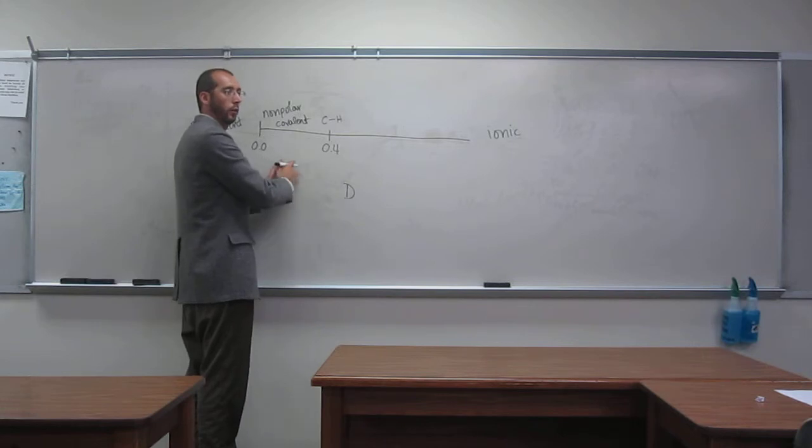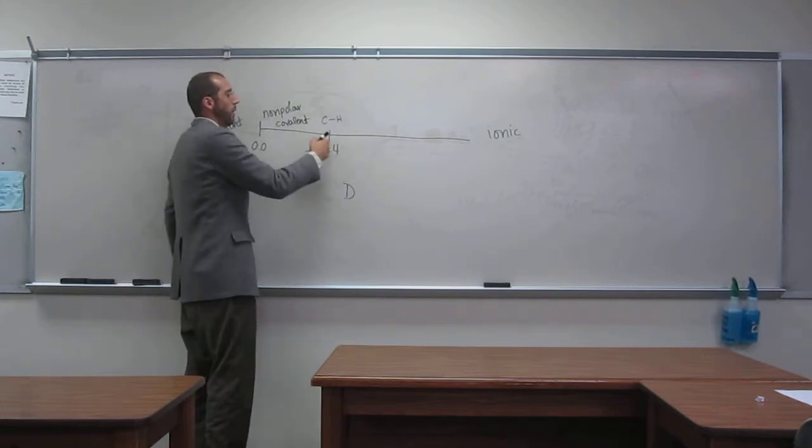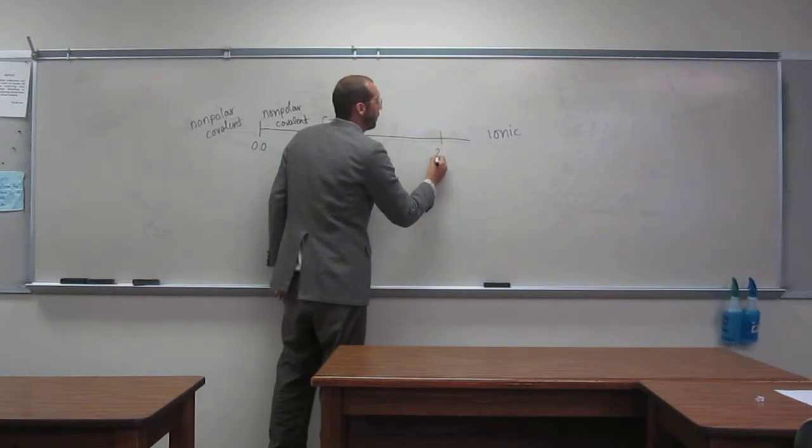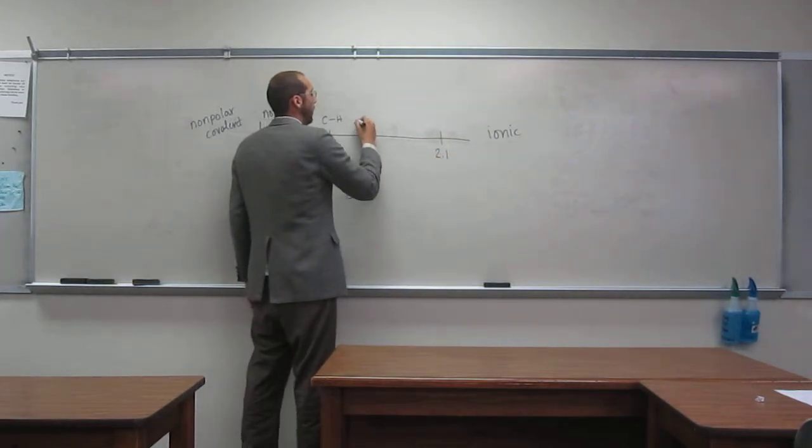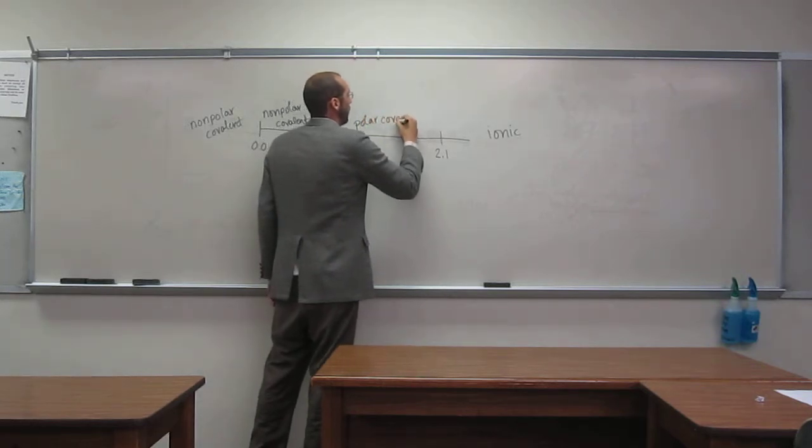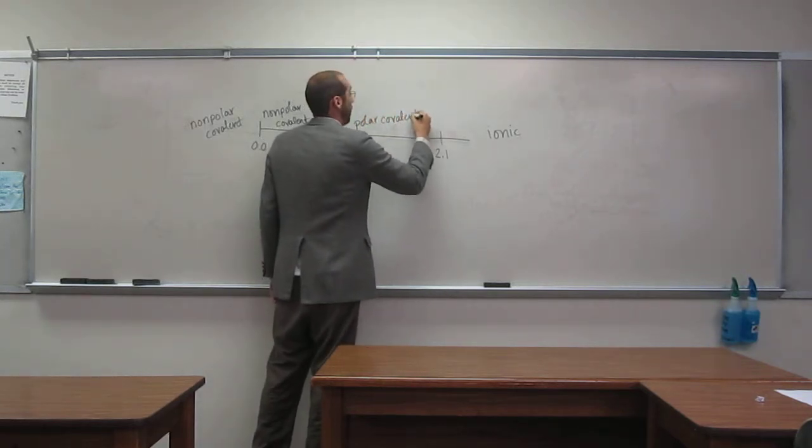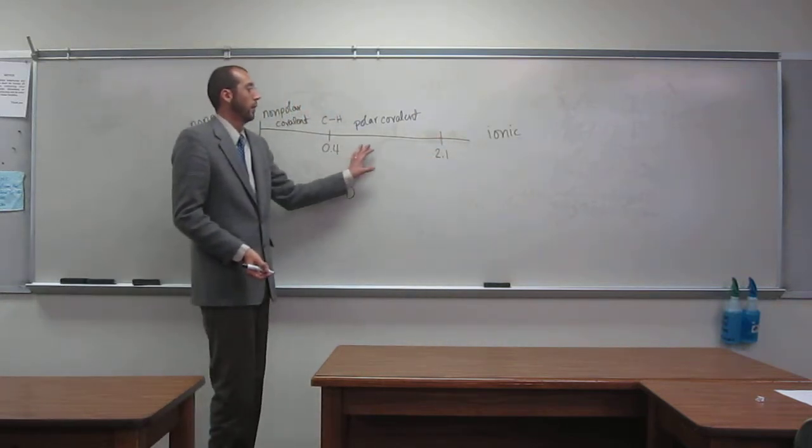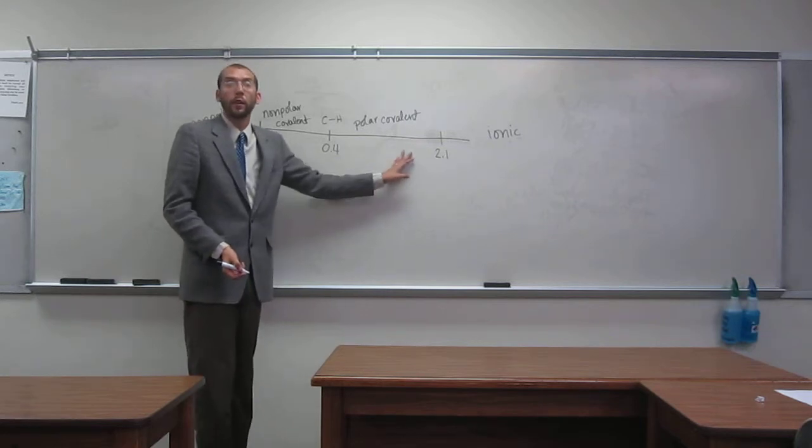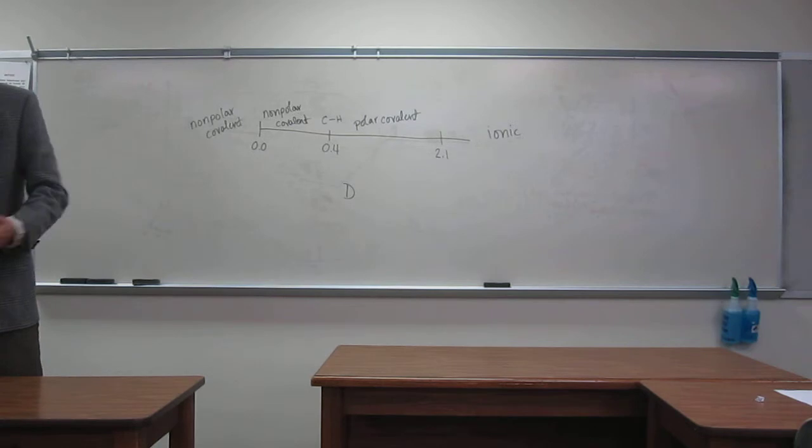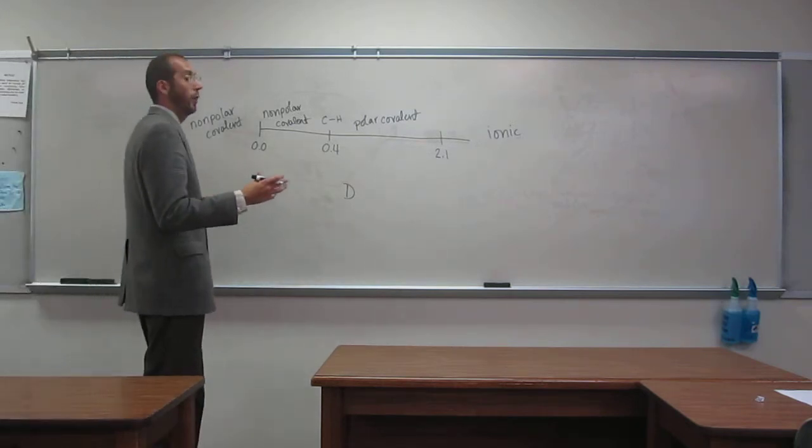From 0.4 to 2.1, we have polar covalent bonds. These give rise to more strong van der Waals forces, so intermolecular attraction.